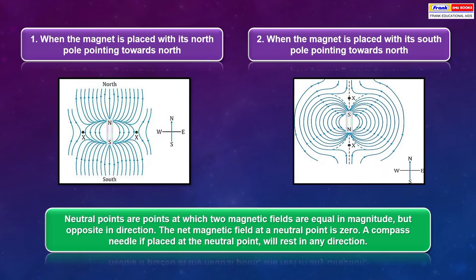Neutral points are the points at which two magnetic fields are equal in magnitude but opposite in direction. The net magnetic field at a neutral point is zero. A compass needle if placed at the neutral point will rest in any direction.